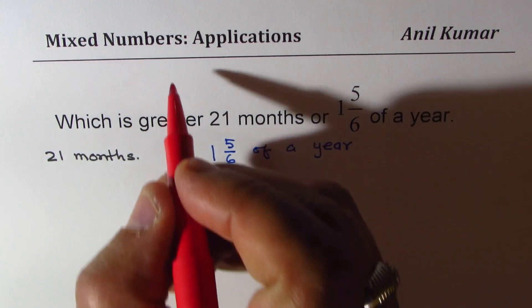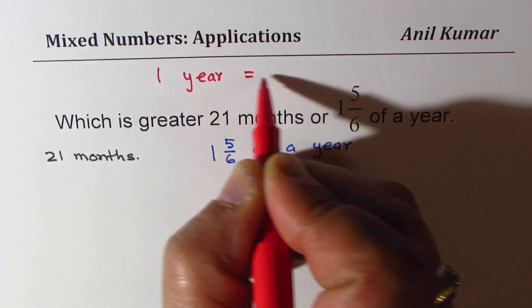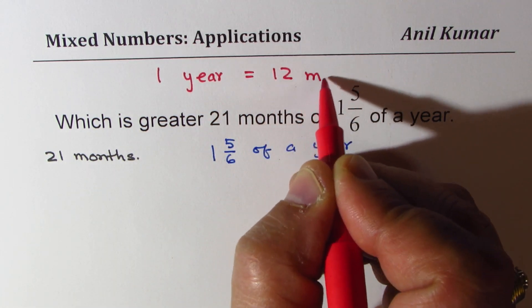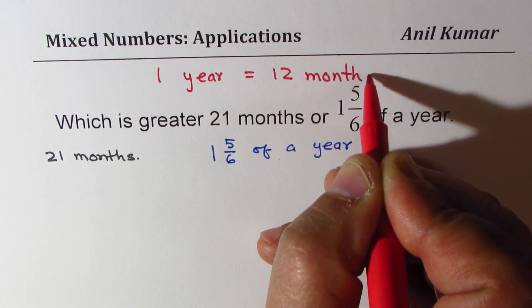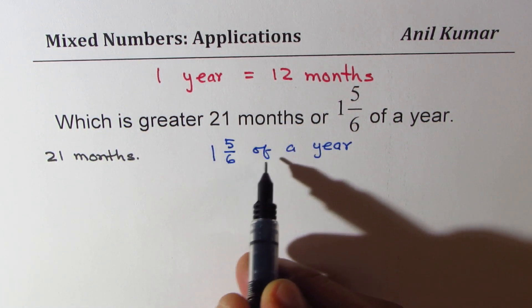the top that one year equals 12 months. Now when I say 1 5/6 of a year